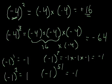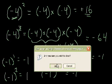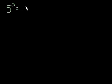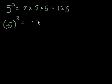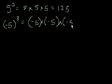Let's do a couple more problems. 5 to the third power is equivalent to 5 times 5 times 5, which equals 125. Similarly, negative 5 to the third power would be negative 5 times negative 5 times negative 5, which would be negative 125.